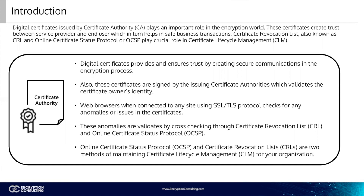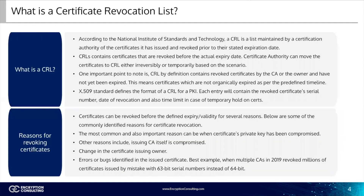Web browsers, when connected to any site using SSL/TLS protocol, check for any anomalies or issues in the certificate. These anomalies are validated by cross-checking through CRL and OCSP. OCSP and CRL are two methods of maintaining Certificate Lifecycle Management, CLM, for your organization. Now we're going to go into the description of CRL — you may be familiar with this from our last video, but I'm going to go over it again anyway.